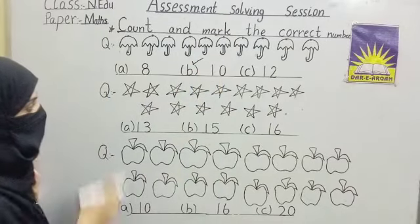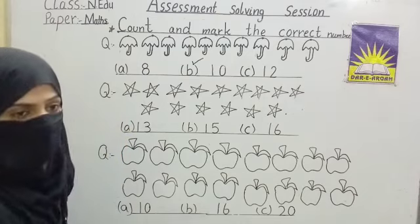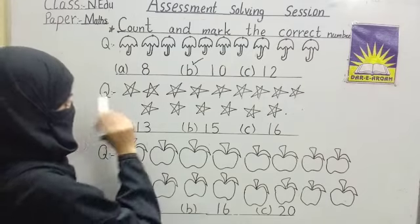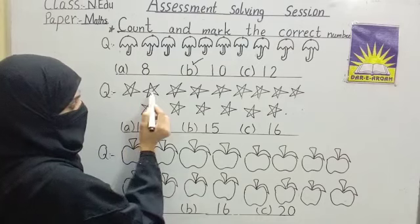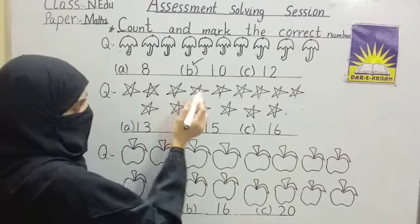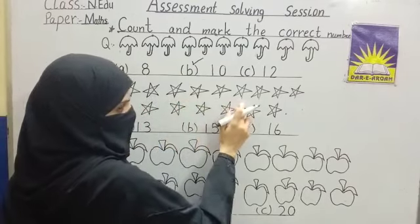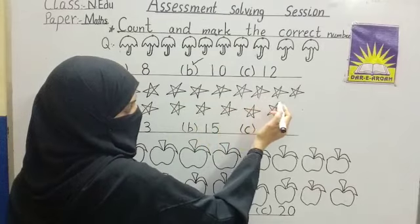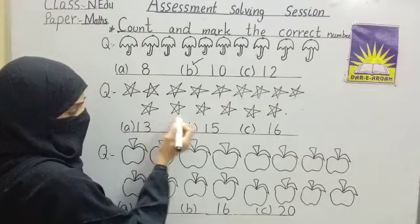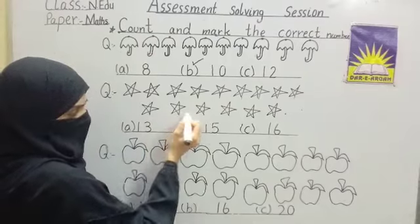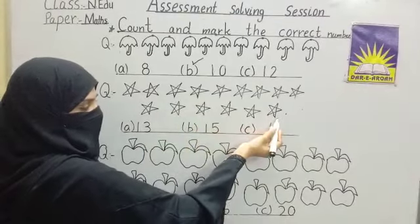Now the next question: how many stars are there? Count with me. One, two, three, four, five, six, seven, eight, nine, ten, eleven, twelve, thirteen, fourteen, fifteen.